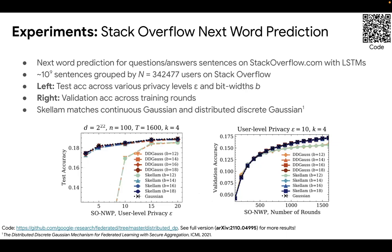We empirically validated the Skellam mechanism under the distributed DP model on federated learning by training a language model on the StackOverflow dataset. On the left, we show the test accuracy across different levels of privacy and communication budgets, and on the right, we show the validation accuracy over training for a particular setting. The main result is that the Skellam mechanism can indeed match the central Gaussian and the distributed discrete Gaussian mechanisms across different settings. Please check out the full version of our paper for more results on federated learning as well as on distributed mean estimation.